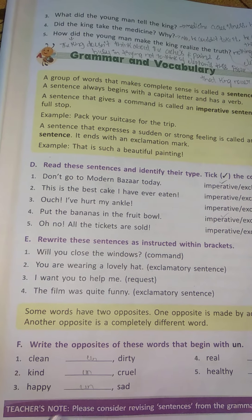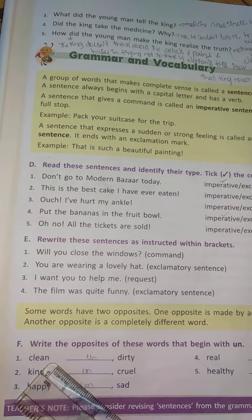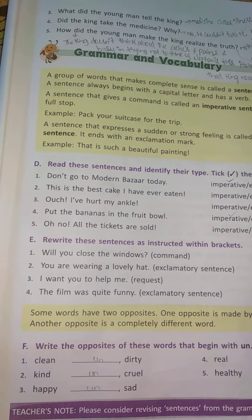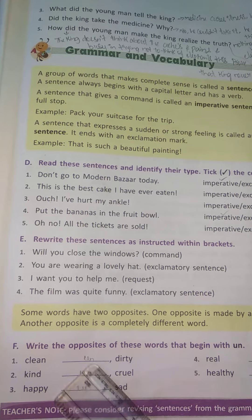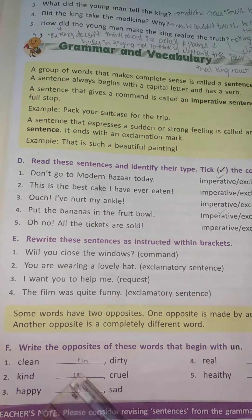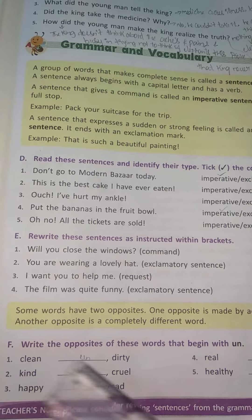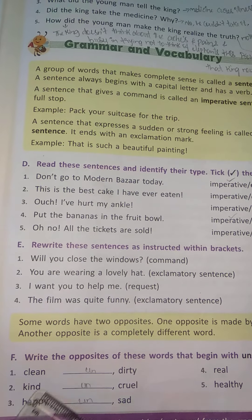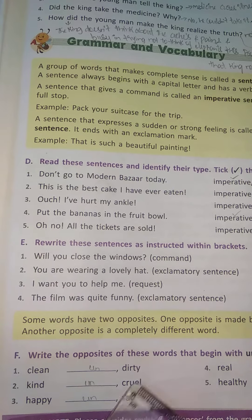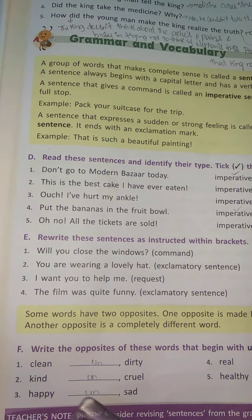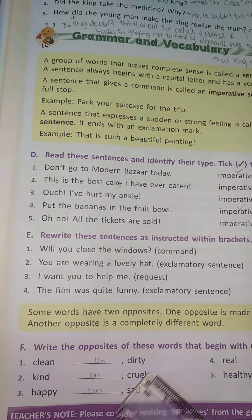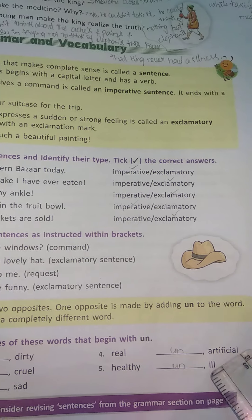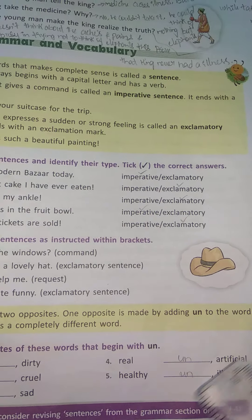Here, some words are given and we have to write the opposite using 'un'. Clean — opposite is unclean (dirty). Kind — opposite is unkind (cruel). Happy — opposite is unhappy (unsad). Real — opposite is unreal (unartificial). Healthy — opposite is unhealthy (unill).